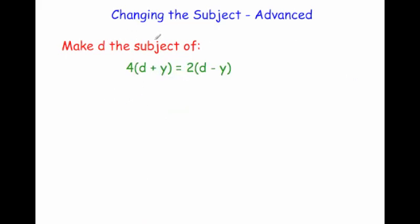Next, make d the subject of 4 bracket d plus y equals 2 bracket d minus y. Let's expand out the brackets: 4 times d is 4d, plus 4 times y is 4y. On the right hand side, 2 times d is 2d, and 2 times minus y is minus 2y.